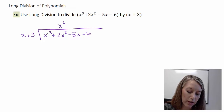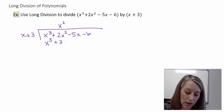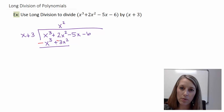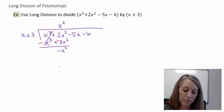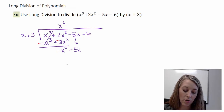I multiply x squared times the divisor. X times x squared gives me x cubed, and 3 times x squared gives me 3x squared. Subtract — distribute my negative and combine. My x cubed terms cancel out, and 2x squared minus 3x squared gives me negative x squared. Bring down my next digit of negative 5x and start over.